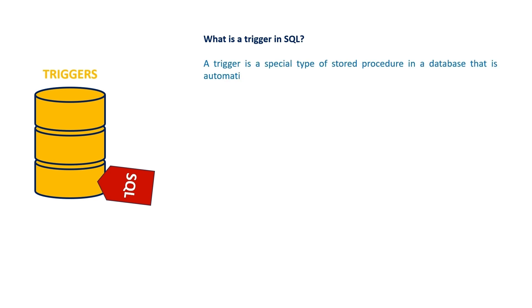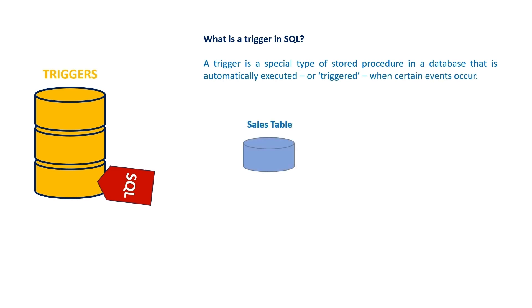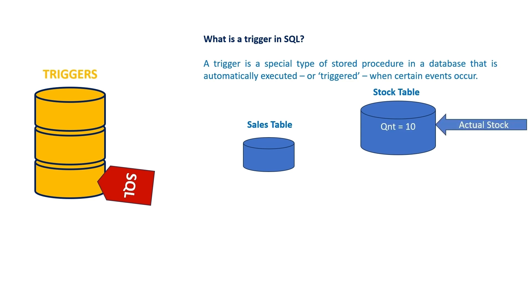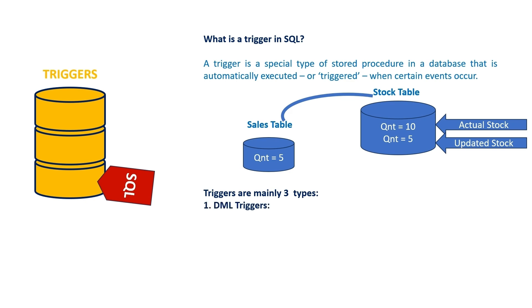What is a trigger in SQL? A trigger is a special type of stored procedure in a database that is automatically executed when certain events occur. For example, create two tables — sales and stock — then insert a new value into sales, say quantity 5, and it will automatically update the stock table. The stock value is detected and updated to 5.